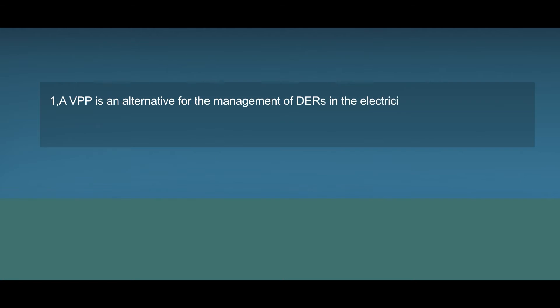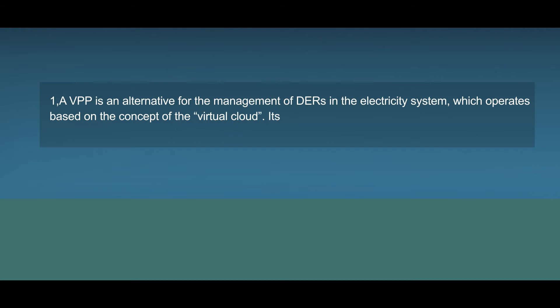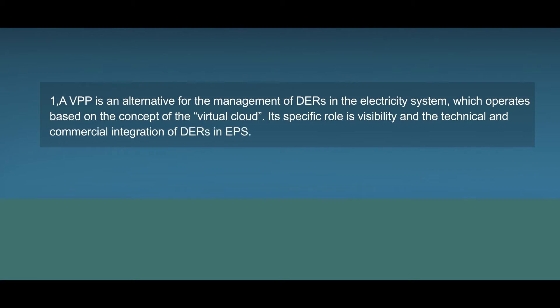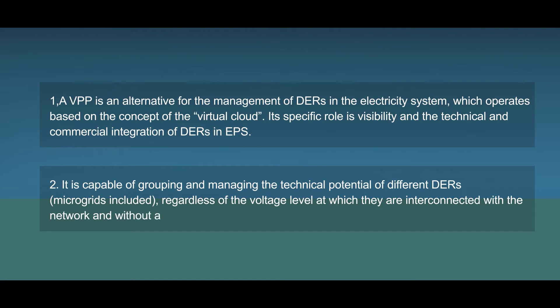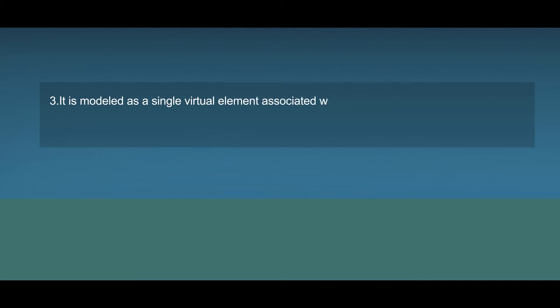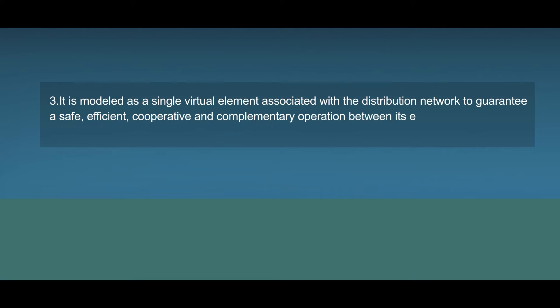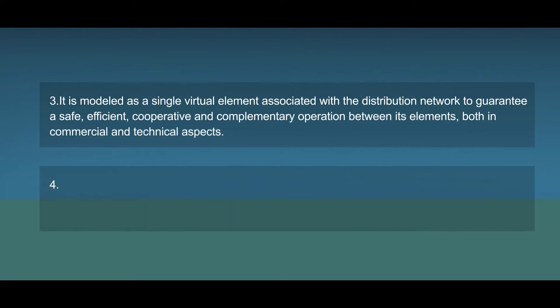A virtual power plant is an alternative for the management of distributed energy resources in the electricity system, which operates based on the concept of the virtual cloud. Its specific role is visibility and the technical and commercial integration of distributed energy resources in the electrical power system. It is capable of grouping and managing the technical potential of different distributed energy resources, regardless of the voltage level at which they are interconnected with the network and without a geographical restriction between the elements. It is modeled as a single virtual element associated with the distribution network to guarantee a safe, efficient, cooperative and complementary operation between its elements, both in commercial and technical aspects.